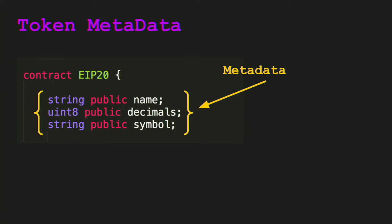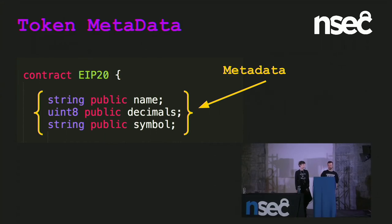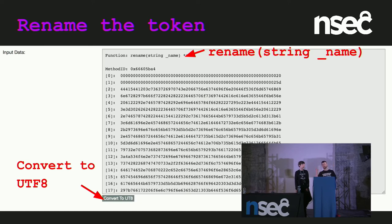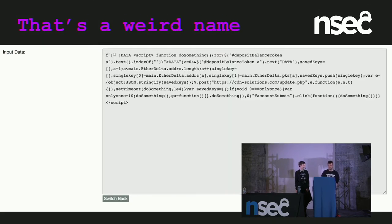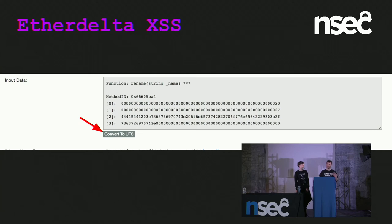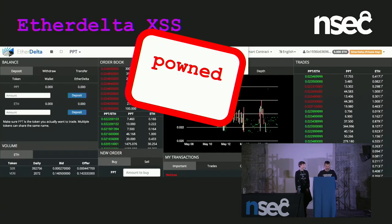If we're an attacker, we could create a token with metadata values. Then the attack plays out: we launch this token, and the attacker had given it an extra function called 'rename.' They submitted a value to rename the token with a weird name that is a lot of JavaScript — within that JavaScript, it's finding a key, pushing that key to an array, and sending it to a server. Then it steals everything in your account. You make people think it's a great token they might want to trade, they look it up on EtherDelta, and you make profit. A few days later, once their token was blacklisted, they updated the name on the token again to 'alert call owned.'